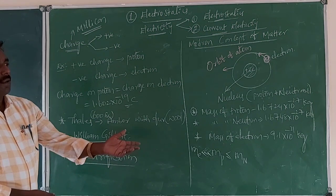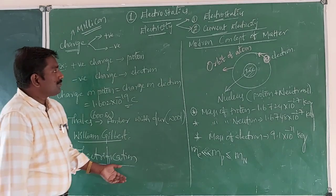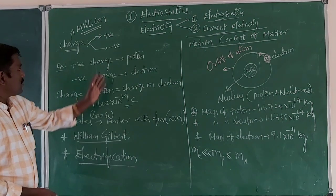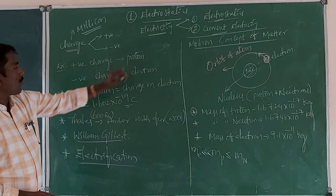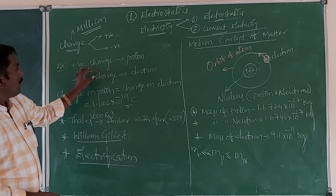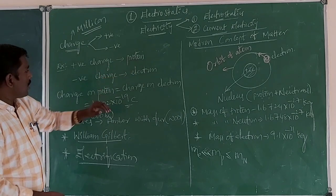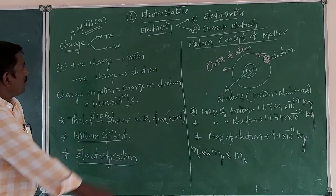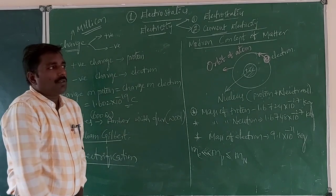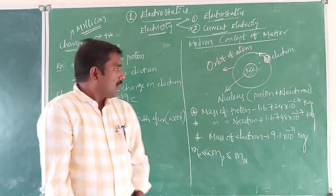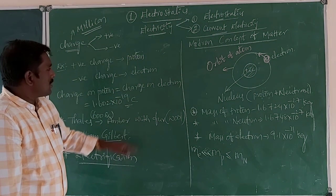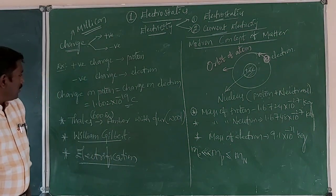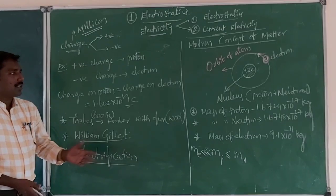There are two kinds of charges: positive charge and negative charge. Positive charge is carried by the proton and negative charge is carried by the electron. The proton was discovered by Rutherford and the electron, the least massive particle in nature, was discovered by J.J. Thomson. The charge of a proton is identically equal in magnitude to the charge of the electron.